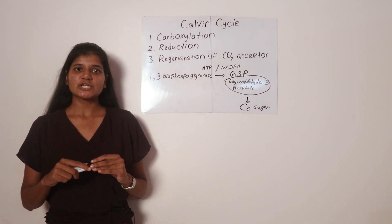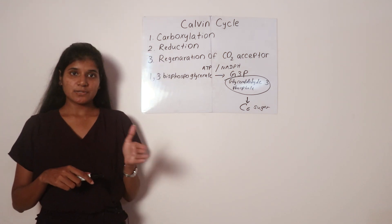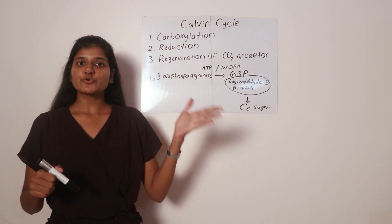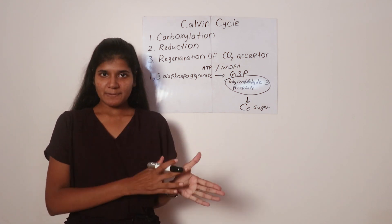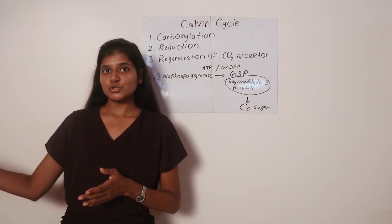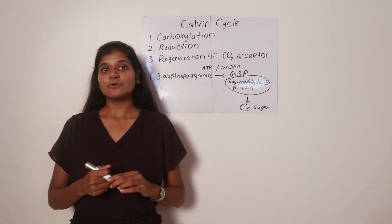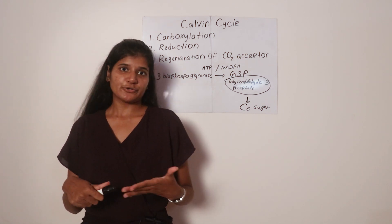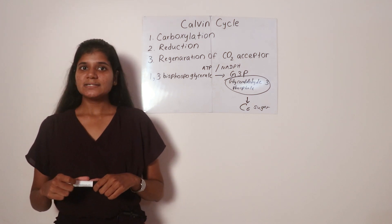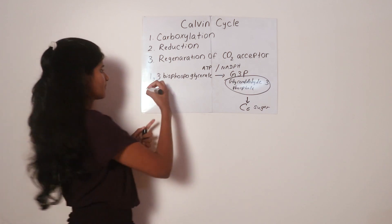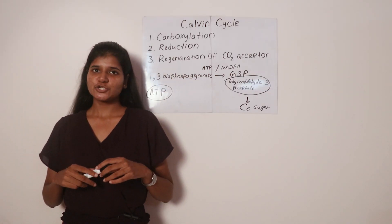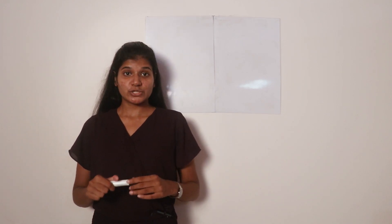The third step is the regeneration of the carbon dioxide acceptor. In C3 plants, the carbon dioxide acceptor is RUBP (ribulose bisphosphate). Since RUBP was consumed in the carboxylation reaction — combining with CO₂ to form an unstable C6 compound that broke down into two molecules of 3-PGA — it must be regenerated through a series of complex reactions. The energy needed for regeneration is supplied by the remaining ATP produced in the light reaction. This completes the full process of photosynthesis, covering both the light reaction and the Calvin cycle.